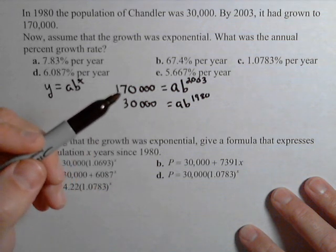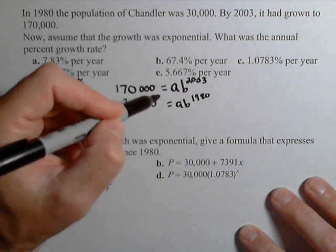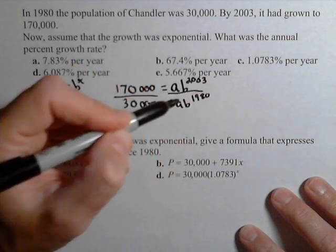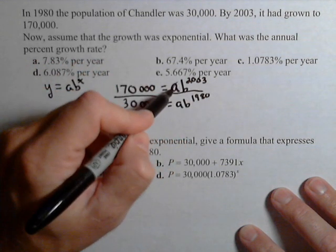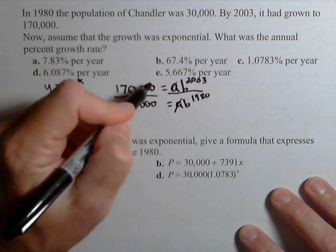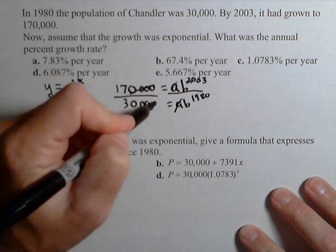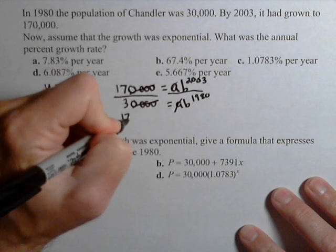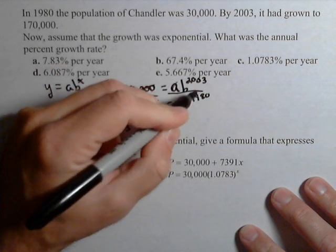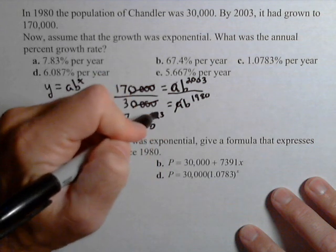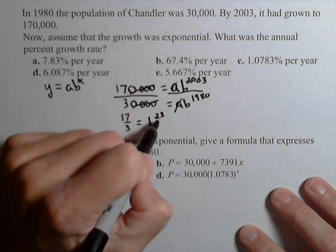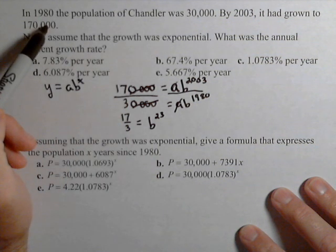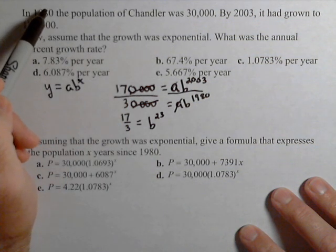Okay, nice thing about this method, you can use it to find any exponential function between two points. What we're going to do is use elimination by dividing the two, because the a's cancel. We get a whole bunch of canceling over here, so that just becomes 17 over 3 equals b to the 23rd. Well, notice where the 23 came from - it was the number of years. 17 over 3, well that's the population in 03 divided by the population in 80.